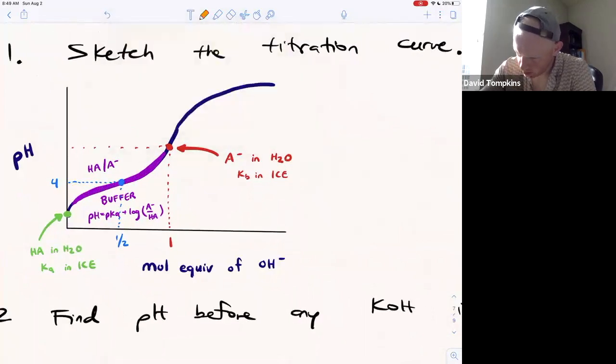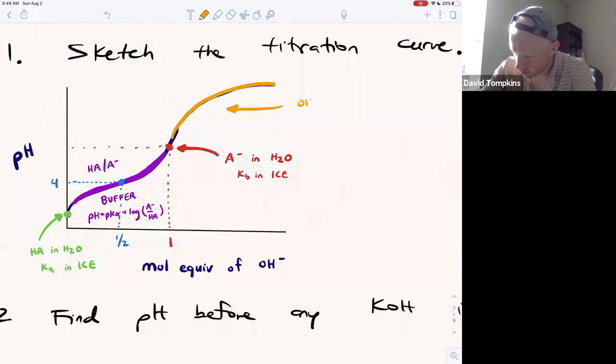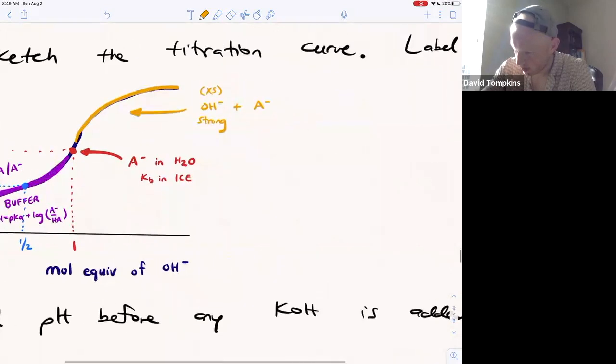Beyond the equivalence point is the fourth region. Anything beyond this is where we've added more than one mole equivalent of hydroxide, or we have a bunch of strong base and some weak base remaining, or excess strong base. This simplifies to a typical strong base problem from GenChem.